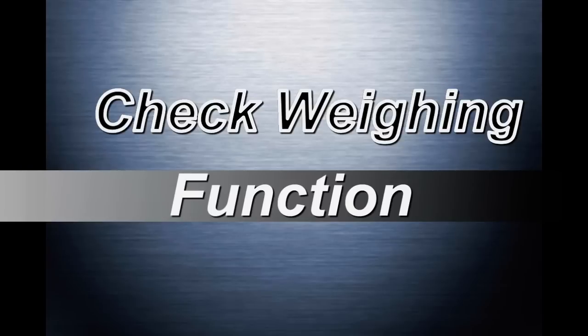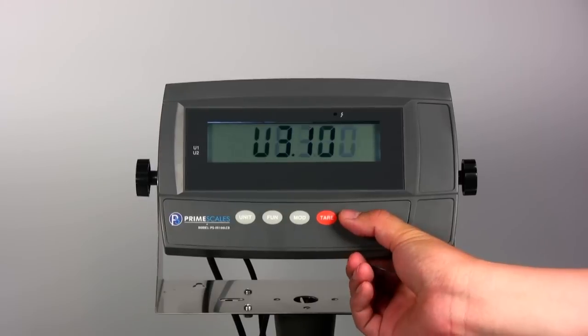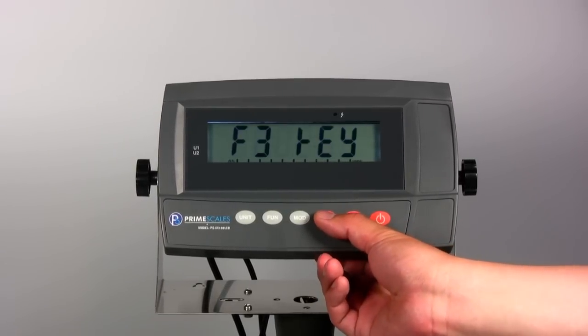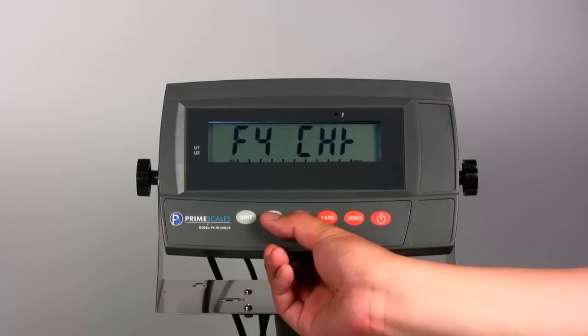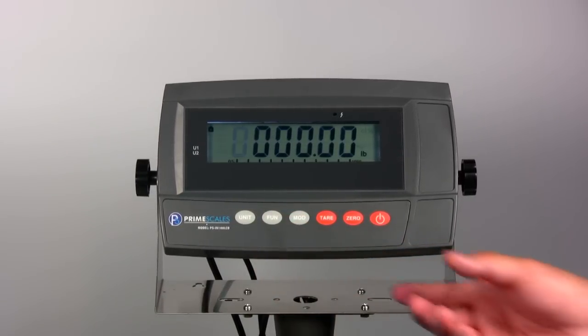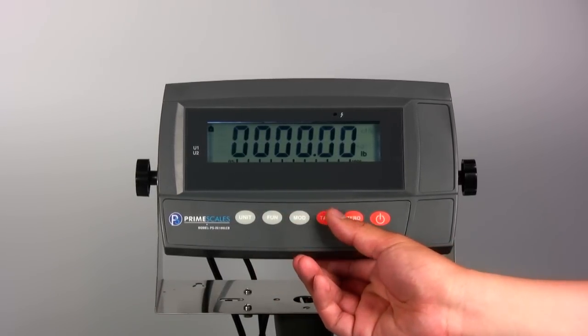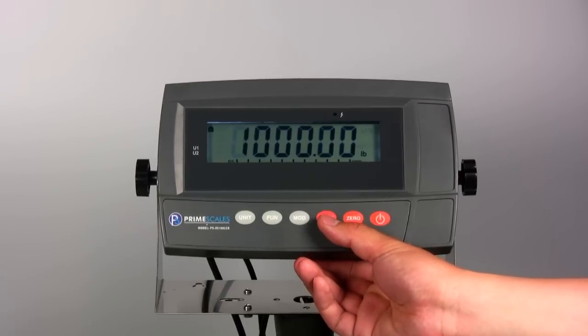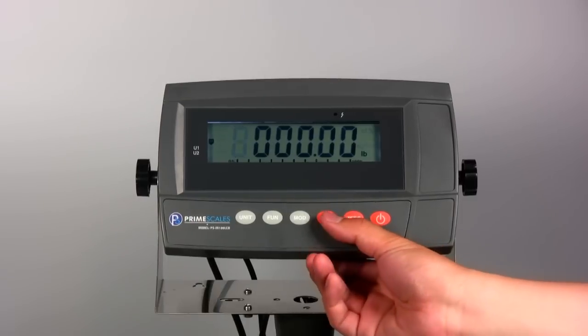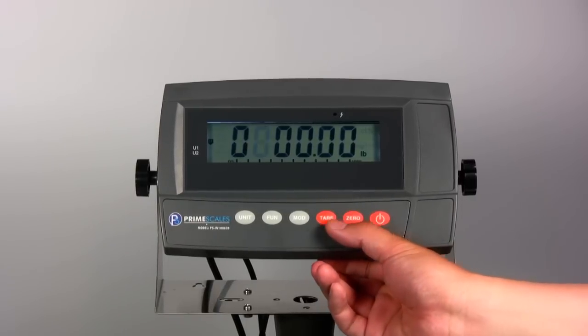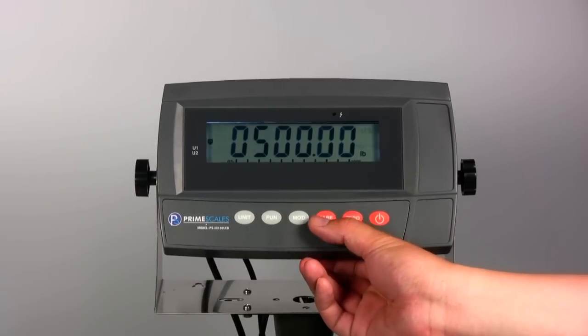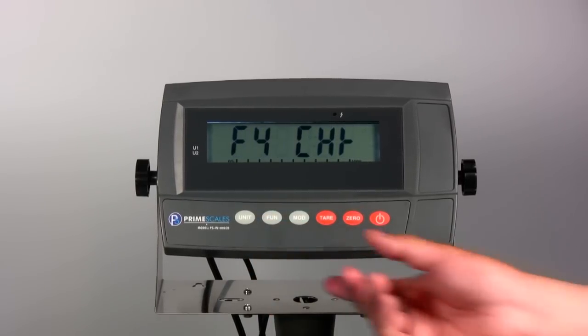Check Weighing is widely used in quality control. The indicator will show a sign and send a beep sound when the loaded weight is within or beyond the preset range. In the Check Weighing mode, first you need to preset the high limit and the low limit. Then select the beep sound mode. You can choose no sound, beep within the range, or beep beyond the range.